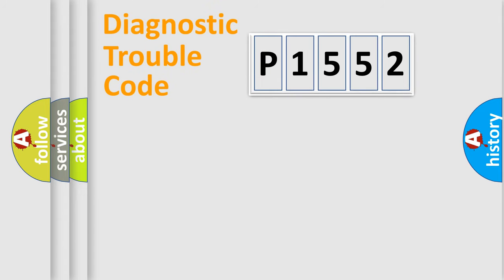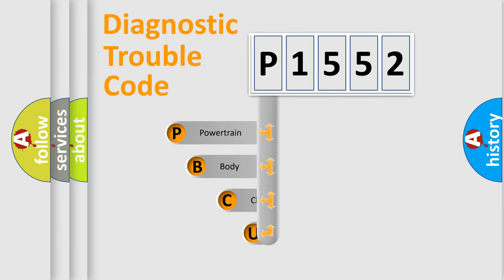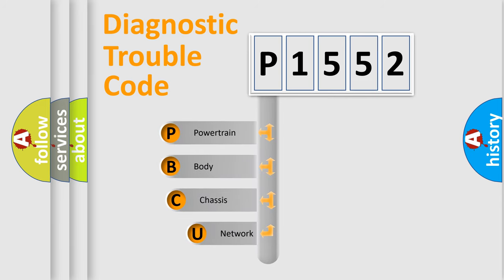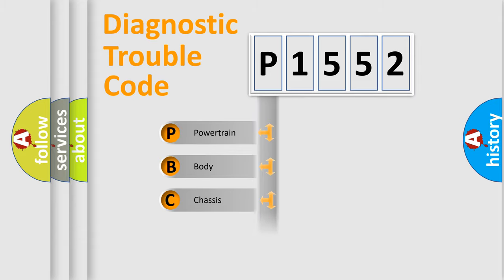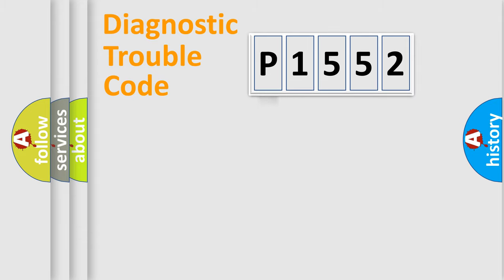Let's do this. First, let's look at the history of diagnostic fault code composition according to the OBD2 protocol, which is unified for all automakers since 2000. We divide the electric system of an automobile into four basic units: Powertrain, Body, Chassis, and Network.